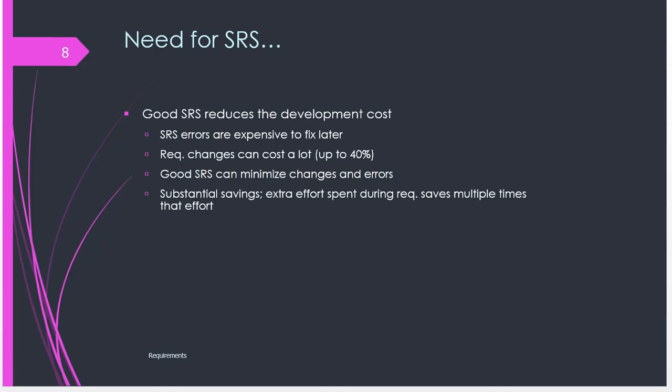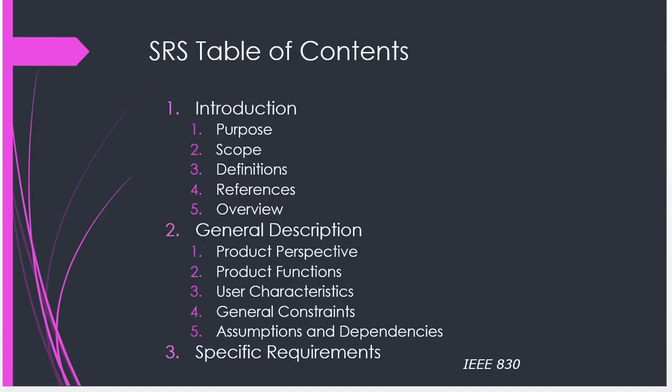A good SRS document reduces development costs — there are fewer errors, fewer changes required, and a lot of savings in terms of time and money. Here is an example of the structure of an SRS document, showing the introduction including scope, definitions, references, and an overview, then a general description of the product covering product perspective, product functions, user expectations, general constraints, and assumptions, leading into specific requirements.